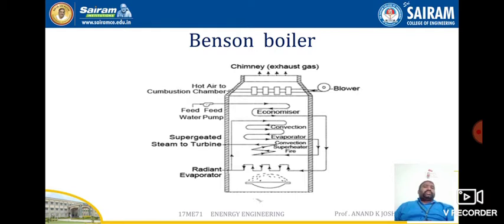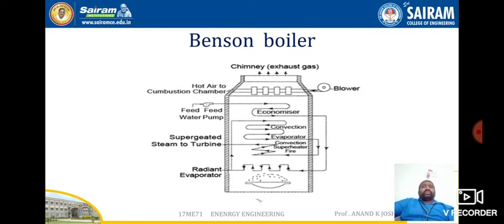Let us discuss the classification of boilers. Boilers are categorized in various types: horizontal, vertical, and inclined; fire tube and water tube boilers; external fire and internal fire boilers; forced convection and natural convection boilers; high pressure and low pressure boilers; stationary and portable boilers; and single tube and multi-tube boilers.